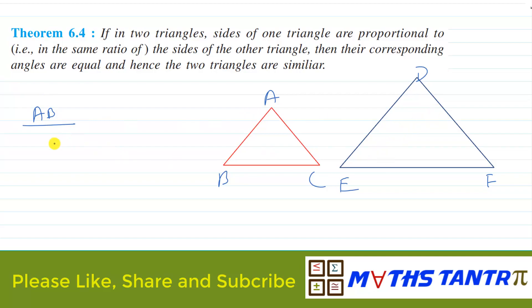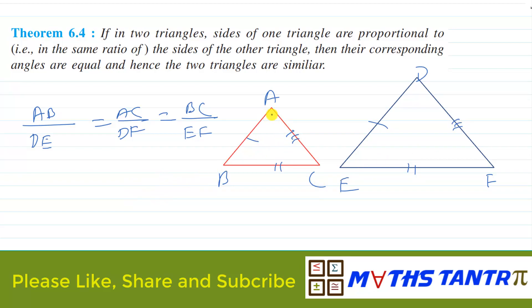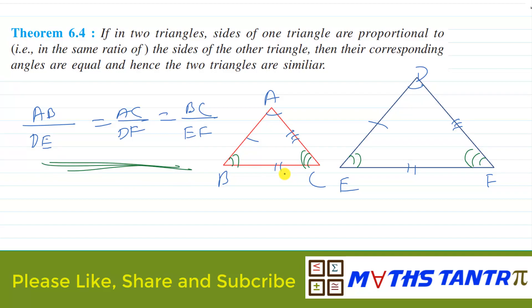If in triangle ABC and DEF, AB upon DE equals AC upon DF equals BC upon EF is given — that is, sides are in proportion — then these two triangles will be similar. And if the two triangles are similar, corresponding angles will be congruent. Just remember: if the ratio of sides is equal, the triangles are similar by using SSS criteria.